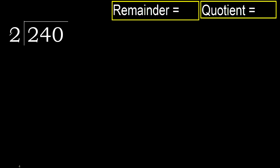240 divided by 2. 2 is not — let's divide by 2. 2 multiplied by which number is nearest to 2 but not greater? 2 multiplied by 2 is 4 — 4 is greater. Multiplied by 1 is 2, which is not greater. Subtract.